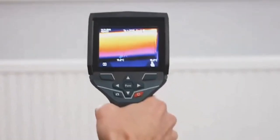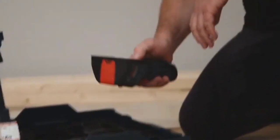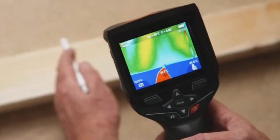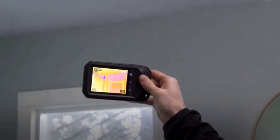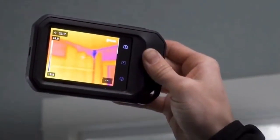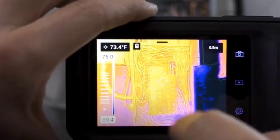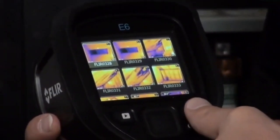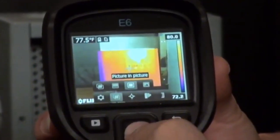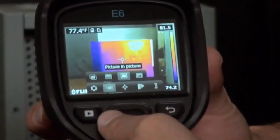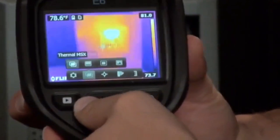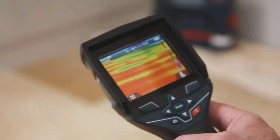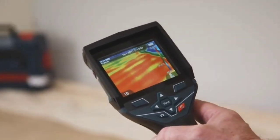This method is particularly useful in detecting hidden leaks behind walls, under floors, or within concealed pipes. The real-time visual representation provided by thermal imaging enables swift and precise diagnosis, facilitating prompt repairs and preventing further damage. This technology is important for proactive maintenance, helping to mitigate the risk of water-related issues and ensuring the overall integrity and efficiency of plumbing systems in both residential and commercial settings.